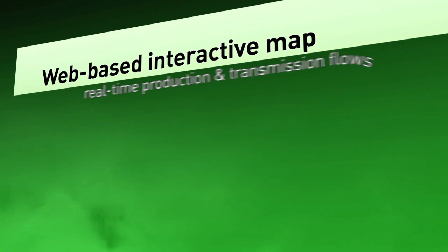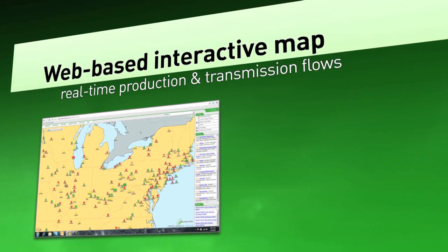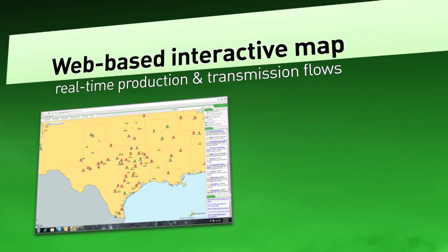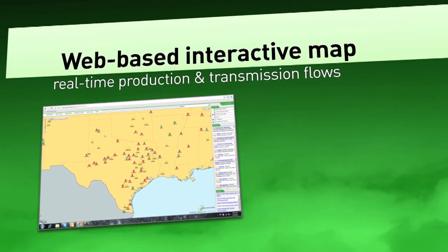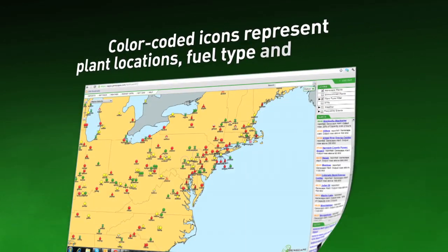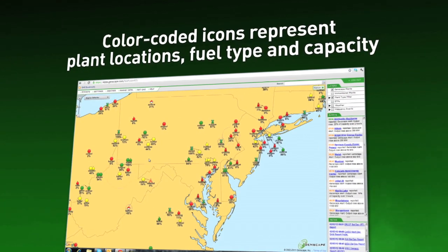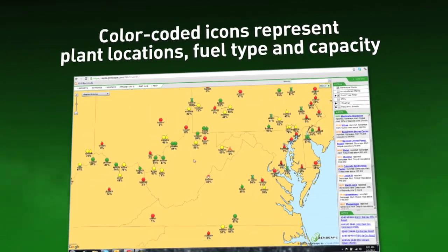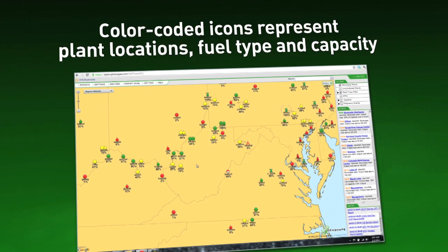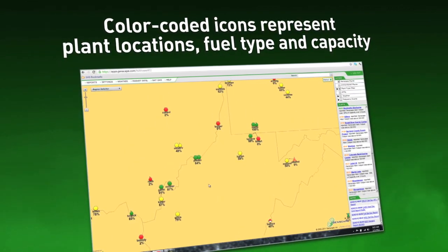An intuitive web-based interactive map represents estimated real-time power production and transmission flows for your power trading markets. Color-coded icons represent plant locations, fuel type, and capacity. In real-time, Genscape's network of patented monitors track each power plant's output.